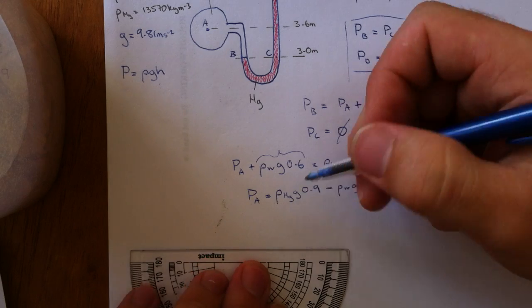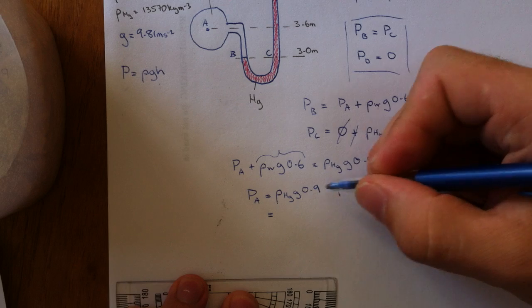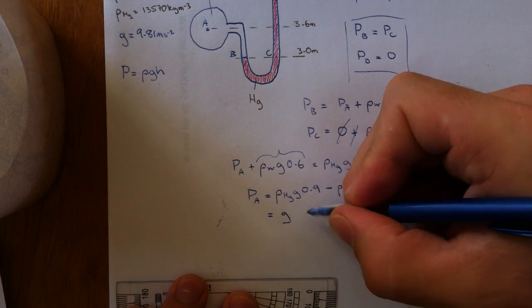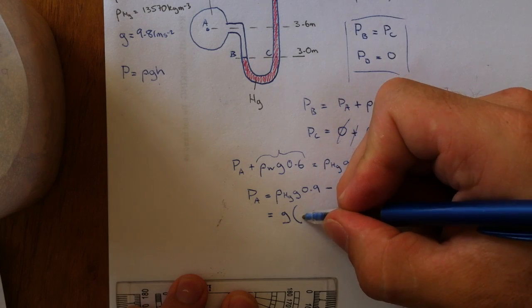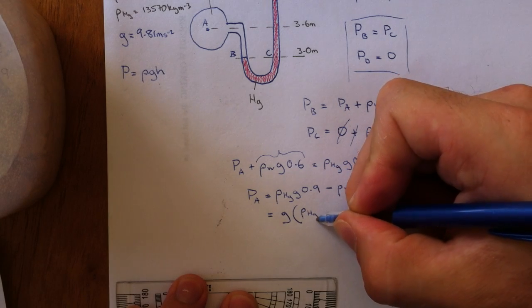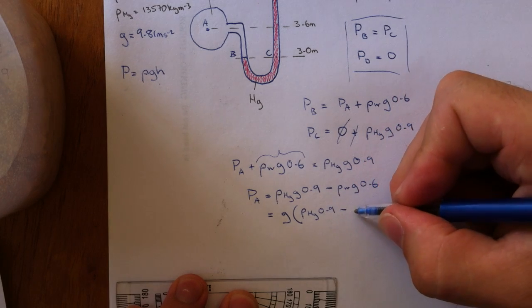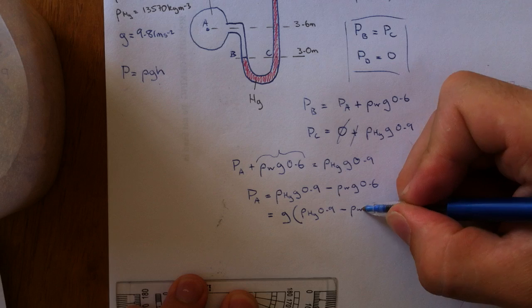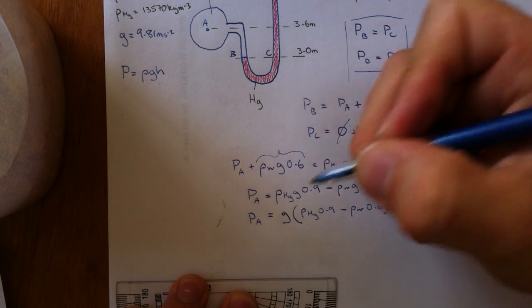And we'll just pull out a few factors here. Gravity is a common factor in both of these. So we can say gravity times density mercury times 0.9 minus density water times 0.6 equals PA.